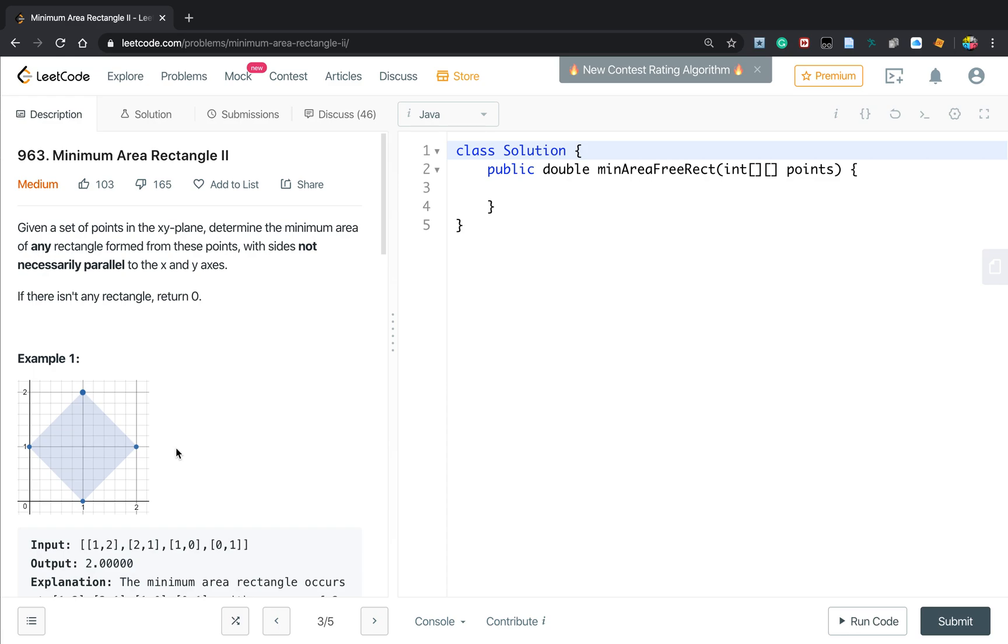This is called Minimum Area Rectangle 2. Given a set of points in the XY plane, determine the minimum area of any rectangle formed from those points, with sides not necessarily parallel to the X and Y axis.